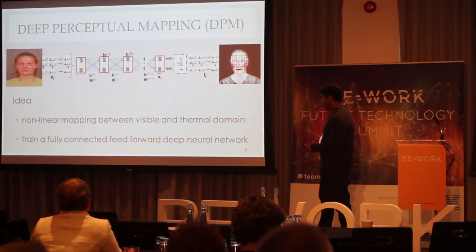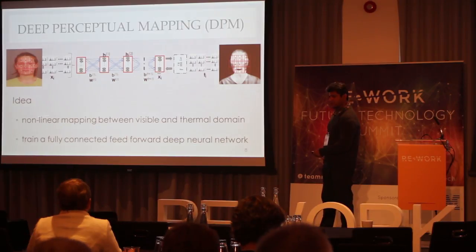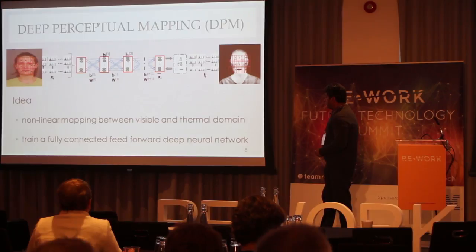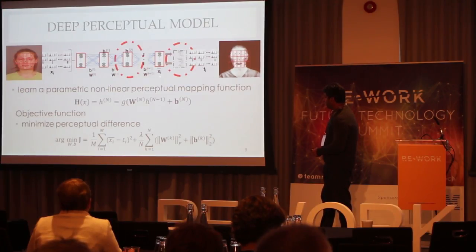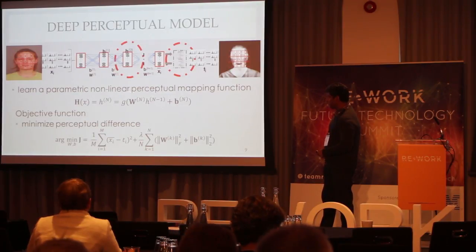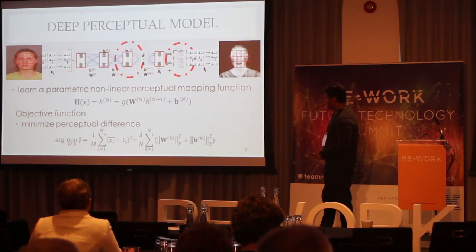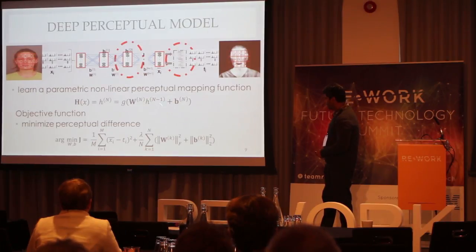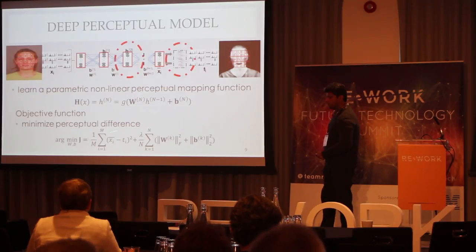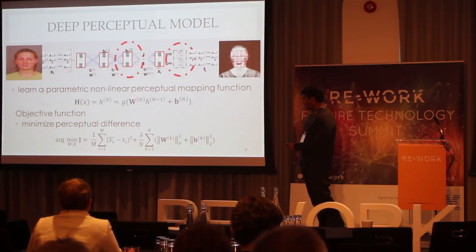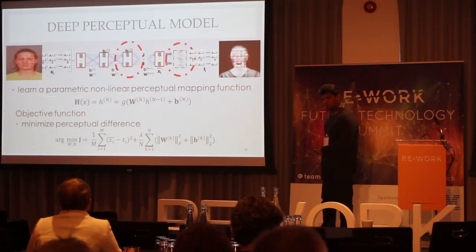The interesting design steps are what's important rather than the deep network itself. This is really a very vanilla network — no big science here. In training, we try to learn a parametric non-linear perceptual mapping function in the hidden layers. The parameters of this function are optimized via an objective function which is basically simply a square loss between the two modalities.